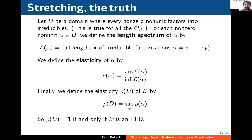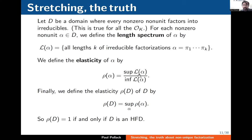Let D be a domain where every non-zero non-unit factors into irreducibles — a pretty weak requirement holding for all rings we'll discuss and for any Noetherian domain. For any non-zero non-unit α, I define the length spectrum of α as the set of all positive integers k for which α has a factorization as a product of k irreducibles. The elasticity of α is the supremum of the length spectrum divided by the infimum. The length spectrum is a non-empty set of positive integers, so the denominator is really a minimum.